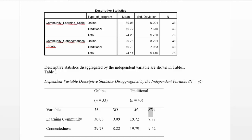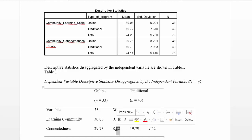Also note that these are italicized, which is required by APA. And finally, note that here I reported two decimal points. Most style guides, and specifically APA, suggest that you either report two or three decimal points, whichever is clear. It just needs to be consistent.